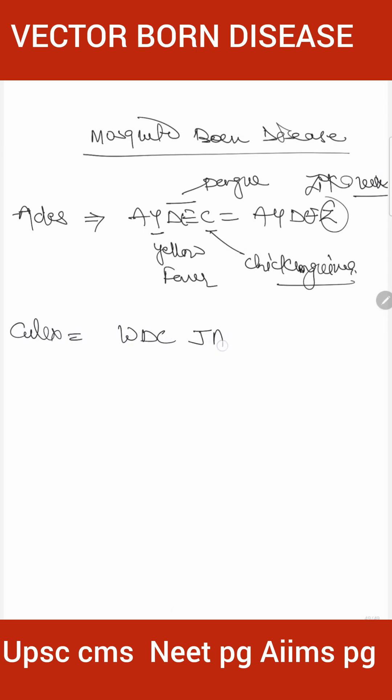So WBC goes high - W means West Nile fever. Always ask: West Nile fever transmitted by? Answer is Culex. B for Bancroftian filariasis.